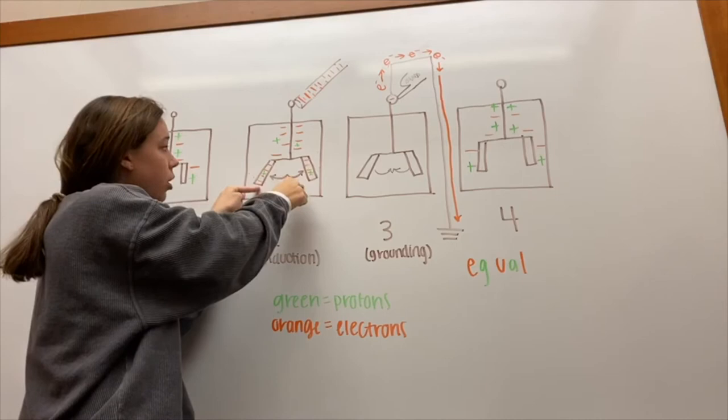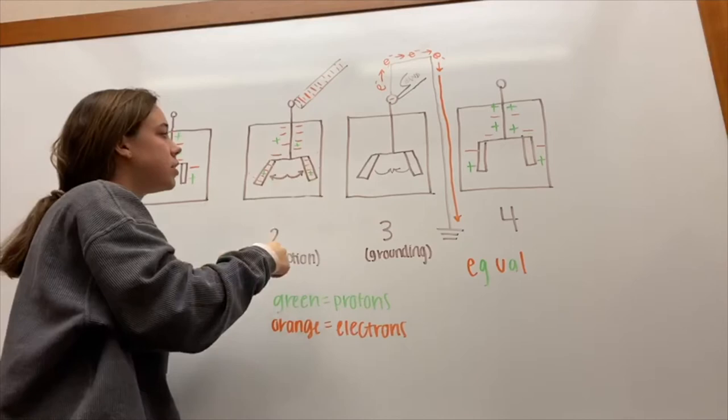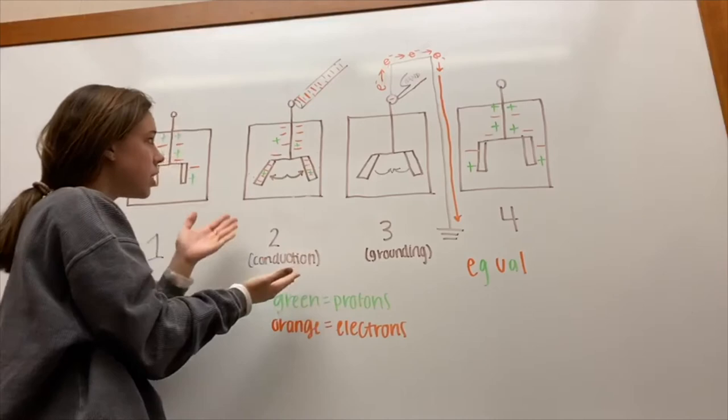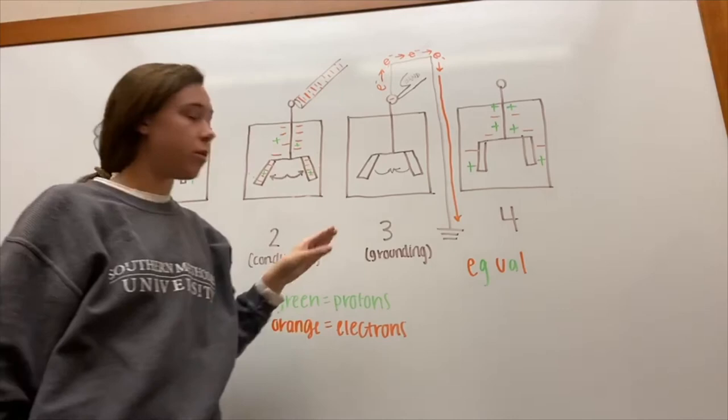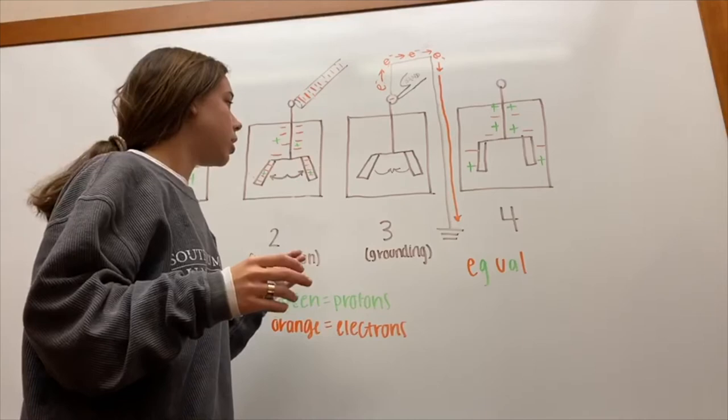You can see that there are still some protons in here because the protons are never going to completely leave. There's just now more electrons than there are protons. Because of this contact, that is how you charge the electroscope by conduction.